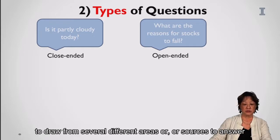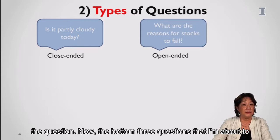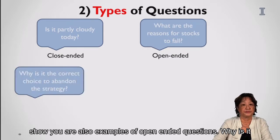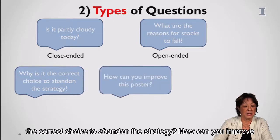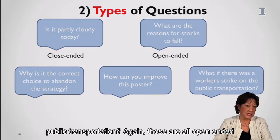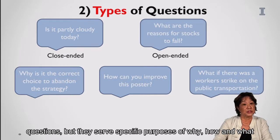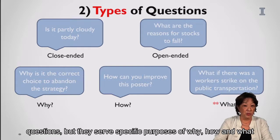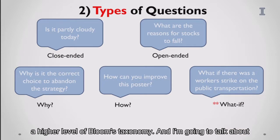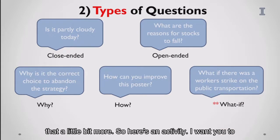The student has to draw from several different sources to answer open-ended questions. Here are more examples: 'Why is it the correct choice to abandon the strategy?' 'How can you improve this poster?' And 'What if there was a worker strike on the public transportation?' These open-ended questions serve specific purposes — why, how, and what if. The 'what if' is particularly interesting because it pulls on the higher level of Bloom's taxonomy.